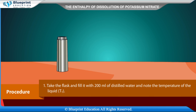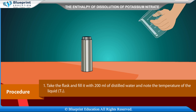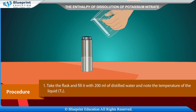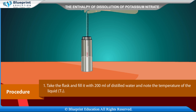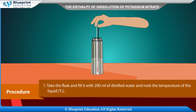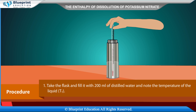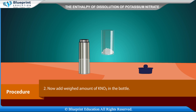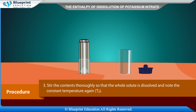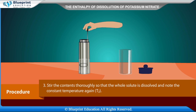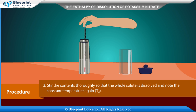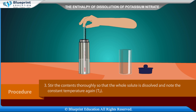Procedure: Take the flask and fill it with 200 ml of distilled water and note the temperature of the liquid, T1. Now add a weighed amount of KNO3 in the bottle. Stir the contents thoroughly so that the whole solute is dissolved and note the constant temperature again, T2.